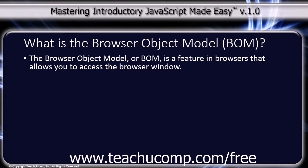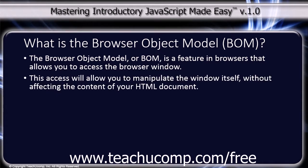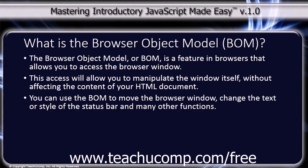The Browser Object Model, or BOM, is a feature in browsers that allows you access to the browser window. This access will allow you to manipulate the window itself without affecting the content of your HTML document. You can use the BOM to move the browser window, change the text or style of the status bar, and many other functions.